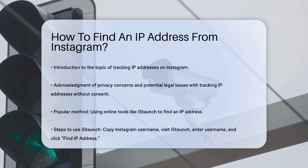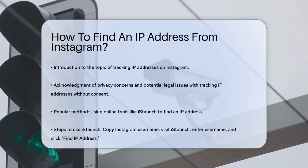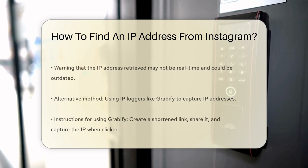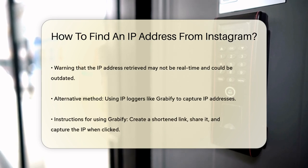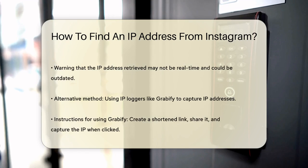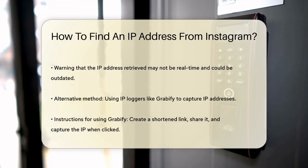One of the most popular methods involves using online tools like iStaunch. Here's how it works: you go to the Instagram app, find the account you want to track, and copy their username. Then you visit the iStaunch website, enter the username into the designated field, and click the Find IP Address button. After a few minutes, you'll see the IP address displayed on the screen.